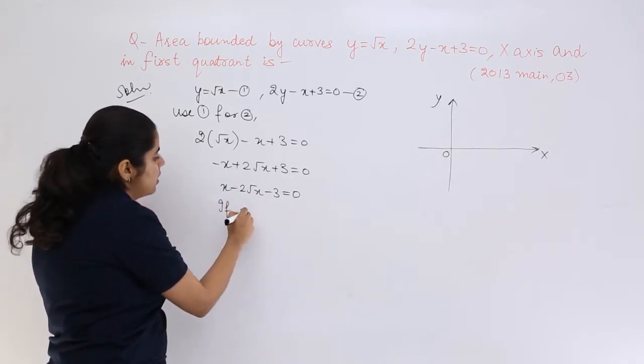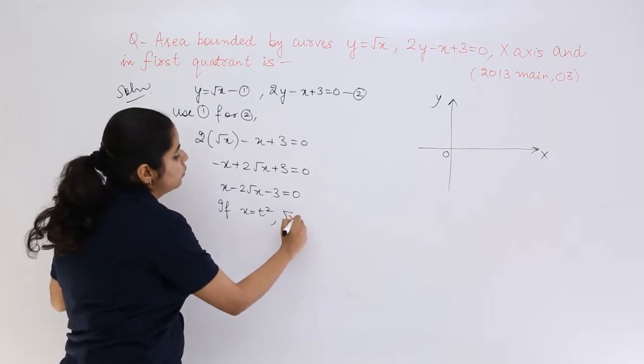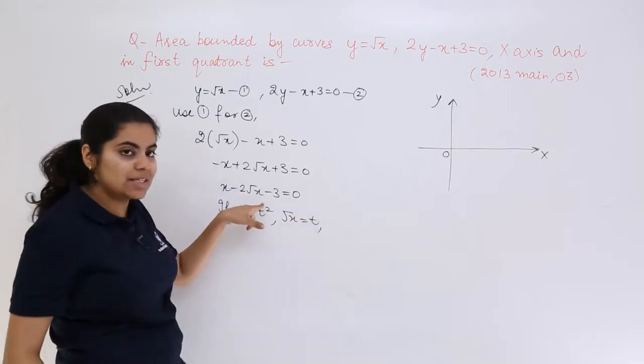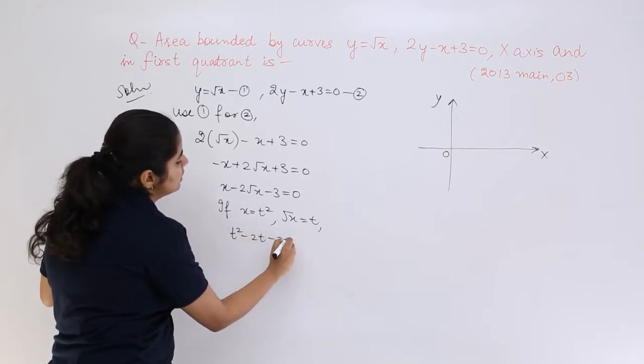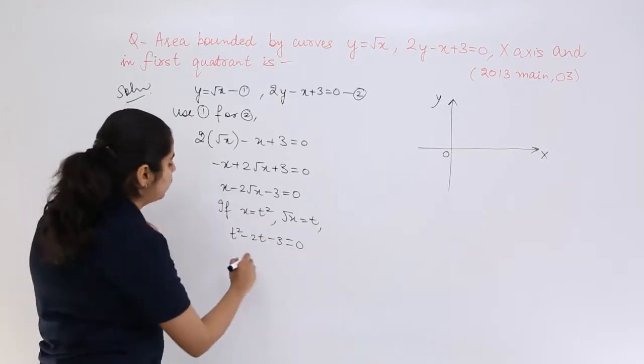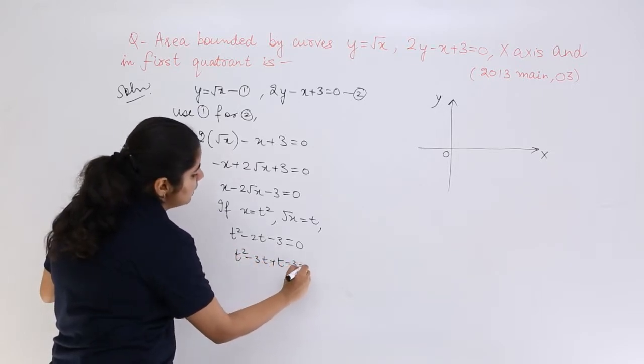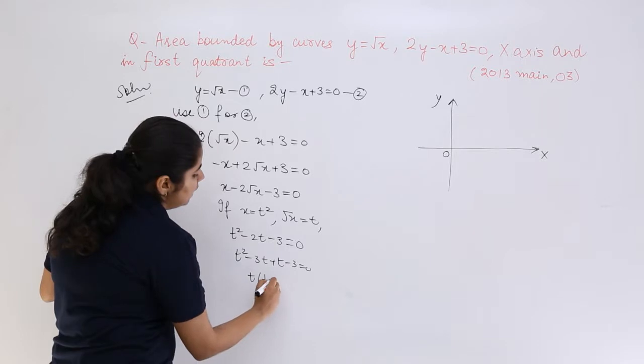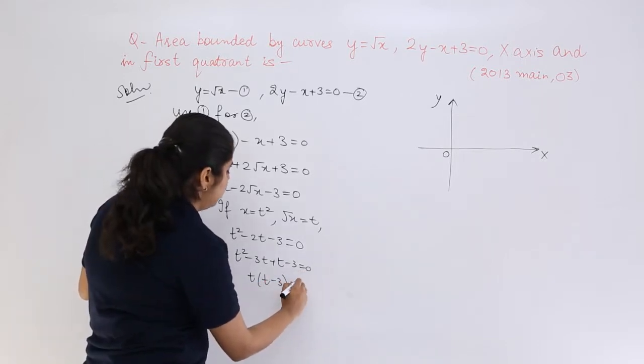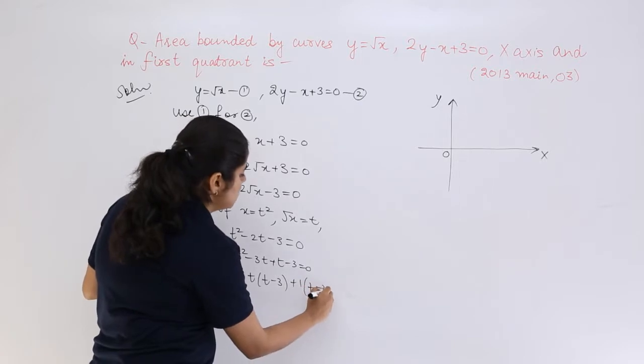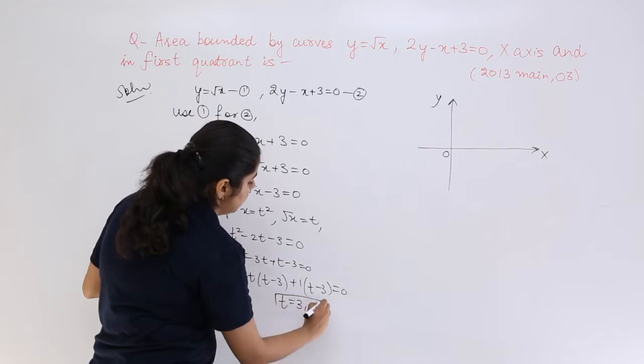If my x equals t squared or root x equals t, I can solve this equation. So I write t squared minus 2t minus 3 equals 0. What would be the factors? t squared minus 3t plus t minus 3 equals 0, which gives t(t minus 3) plus 1(t minus 3) equals 0. So t equals 3 and minus 1.